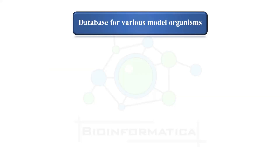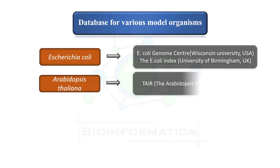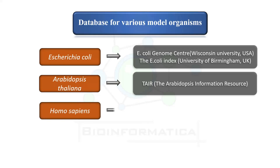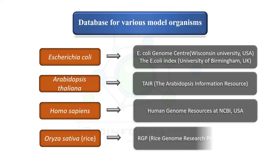Finally, here is a compilation of databases for various model organisms. For E. coli, there are two databases: the E. coli Genome Center and the E. coli Index. For Arabidopsis thaliana, the database is TAIR — The Arabidopsis Information Resource. For Homo sapiens, it is Human Genome Resources at NCBI, USA. For Oryza sativa (rice), the database is RISE and RGP — the Rice Genome Research Program, Japan.